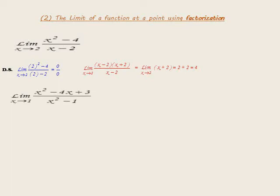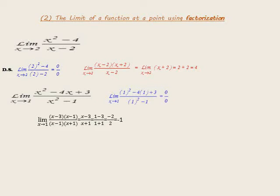Another example: limit as x approaches 1 of (x² minus 4x plus 3) over (x² minus 1). By substitution the result is 0 over 0, an unspecified quantity. We use factorization. Factorizing numerator and denominator: x² minus 4x plus 3 factors as (x minus 1)(x minus 3); denominator x² minus 1 factors as (x minus 1)(x plus 1). Cancel x minus 1. The remainder is (x minus 3) over (x plus 1). Substituting x equals 1: (1 minus 3) over (1 plus 1) equals negative 2 over 2 equals negative 1.